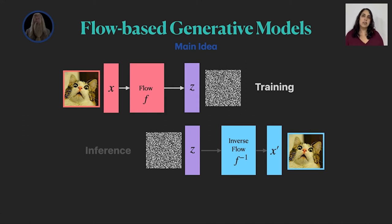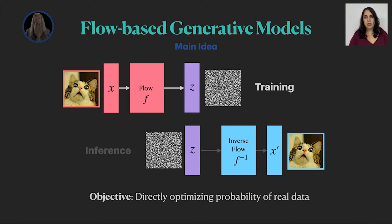And those changes allow us to directly optimize the probability of real data, which is our holy grail. So let's dive in to understand what is flow and how it is useful in a generative model.